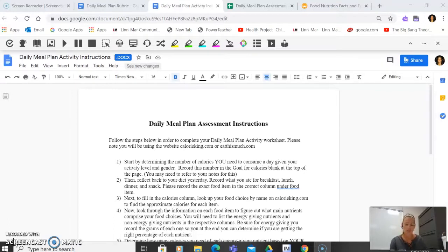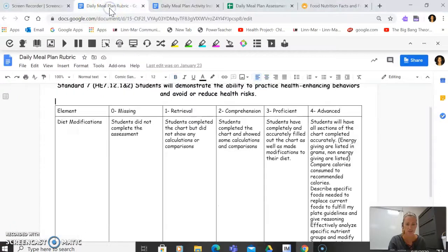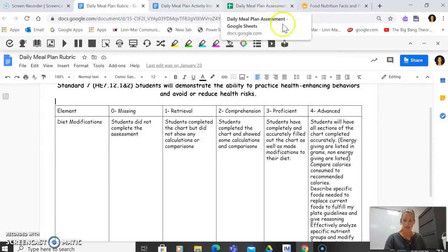I'm just going to read through the lesson instructions and have an example sheet pulled up for you so that you can see what I'm expecting of you. Also, you should have access to the daily meal plan rubric, which will also be in lesson four, so that you can take a look at the level four to see what you are missing or what you need to have completed in order to receive that level four. We are assessing this for your standard.